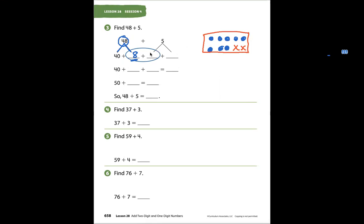With this number 5, I have 2 here, 3, 4, 5. How many are left over here? 3 ones, right. 8 and 2 make 10. Bring down the 3. 40 plus 10 equals 50. Bring down your 3. 50 plus 3 equals 53. So 48 plus 5 equals 53.